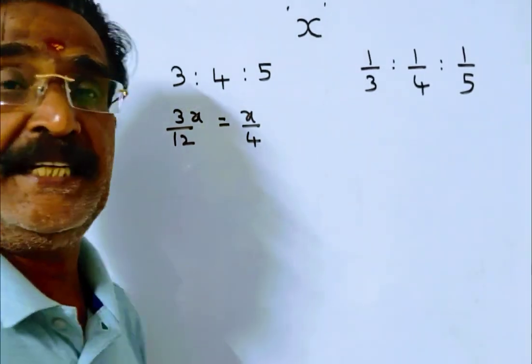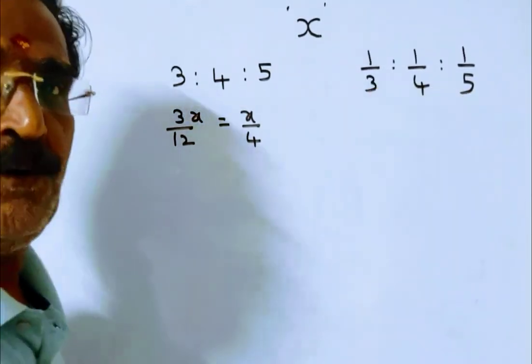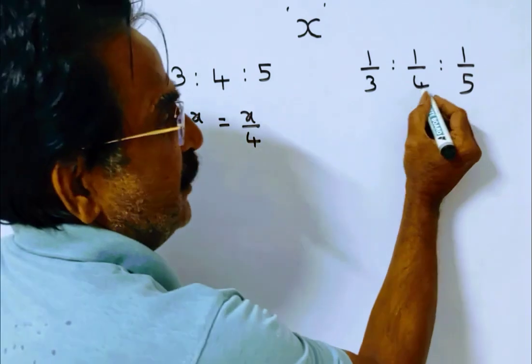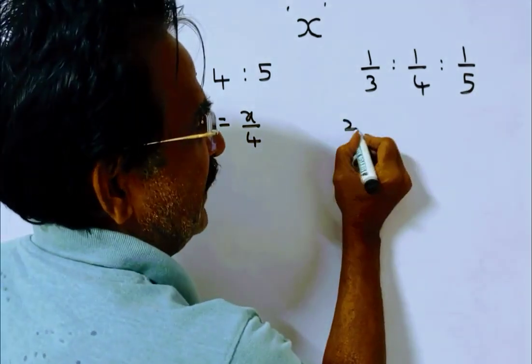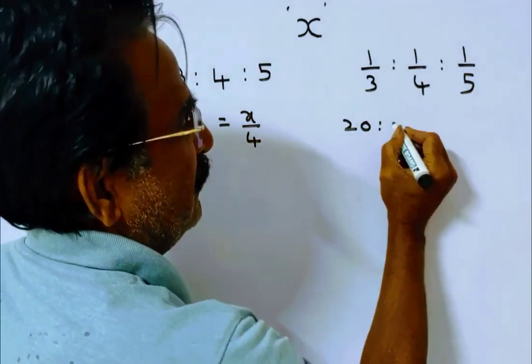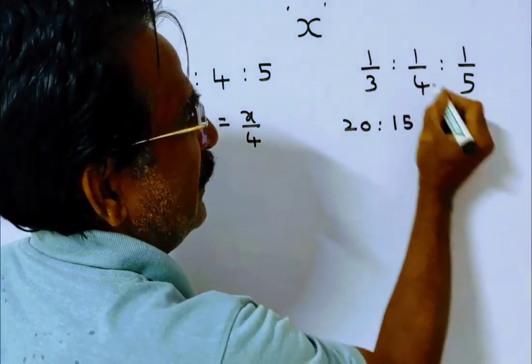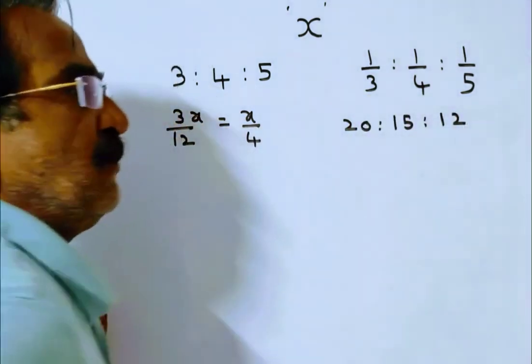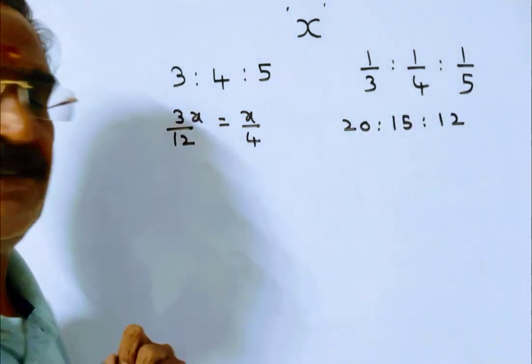Friends, had the property been divided in this ratio, the ratio is 4 times 5 is 20, is to 5 times 3 is 15, is to 3 times 4 is 12. So this is the new ratio.